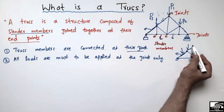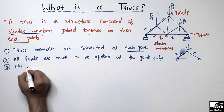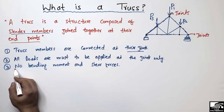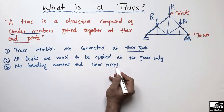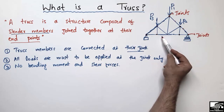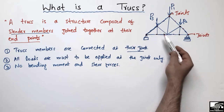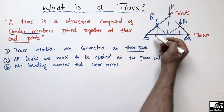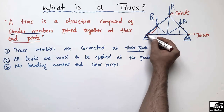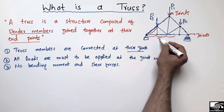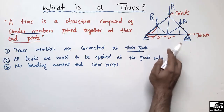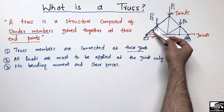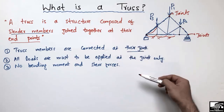The third important point states that there is no bending moment or shear forces in the truss structure. Because the load acts at the joint, we have only tension and compressive forces in the members. We do not have any bending moment diagrams or shear force diagrams for the truss structure — these are ignored in truss analysis.